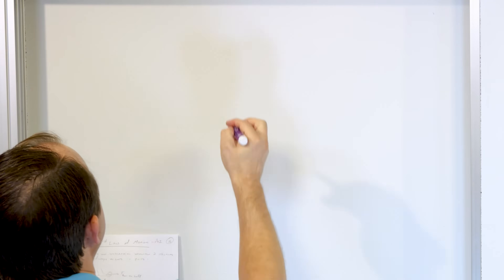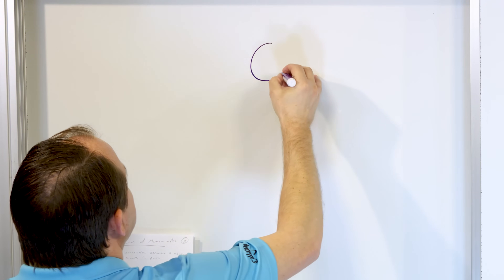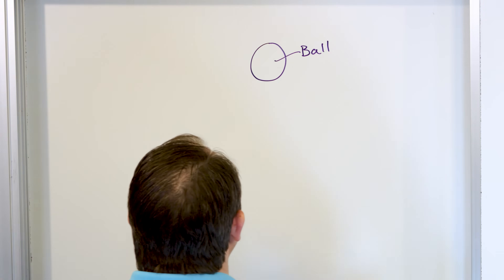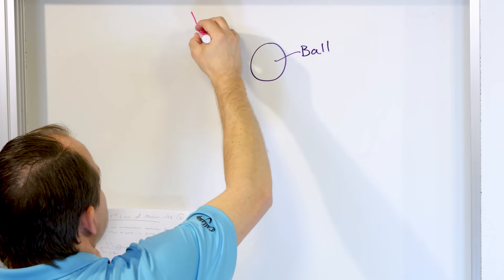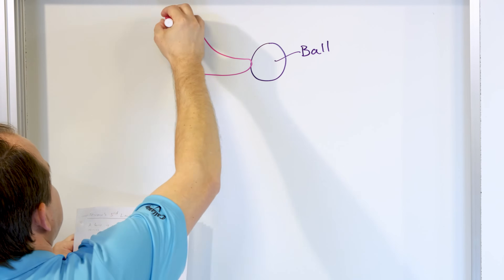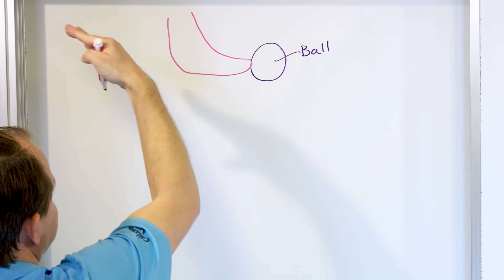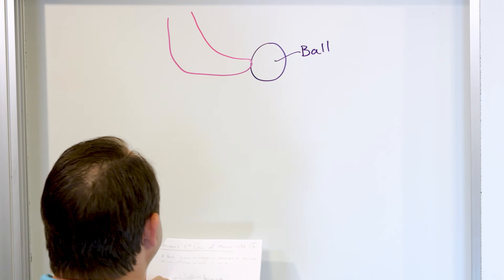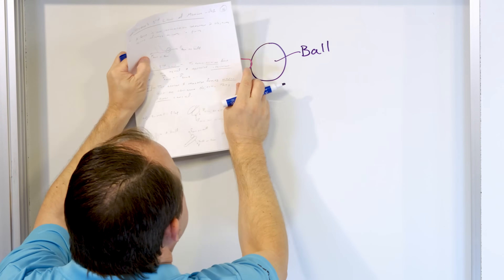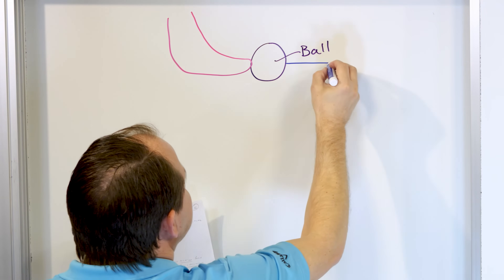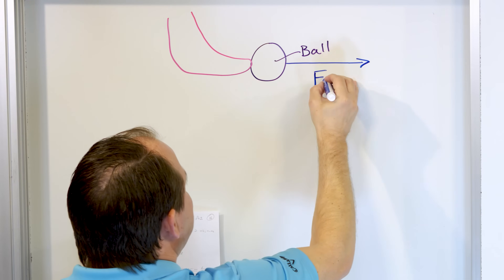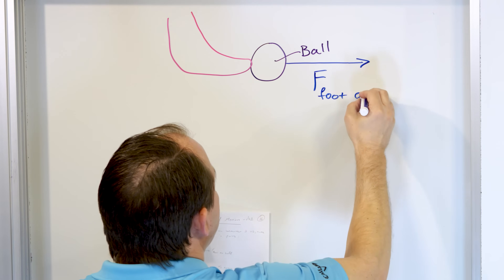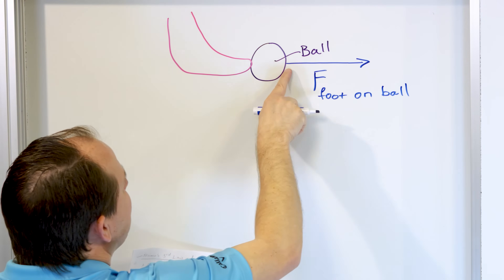Here I'm going to draw a ball - I'm a terrible artist, you all know this. And then I'm going to draw a foot kicking this ball. So here is a foot, and it's kicking the ball - wham, it hits the ball. So what happens at the instant of time that we're interested in? There is a force that acts on this ball going this way. You could call it F, but more specifically, this is the force of the foot acting on the ball, drawn as an arrow from the ball.